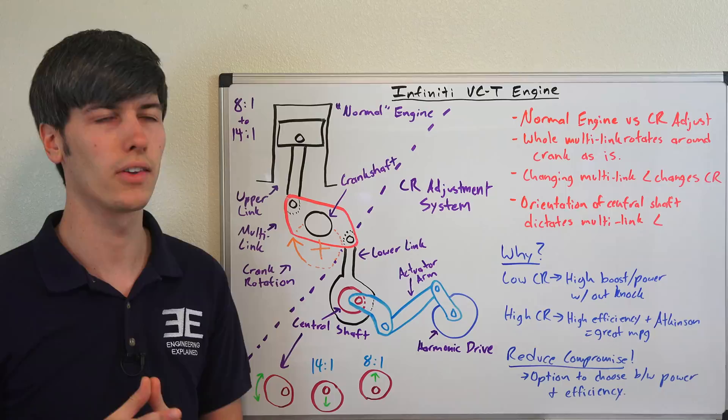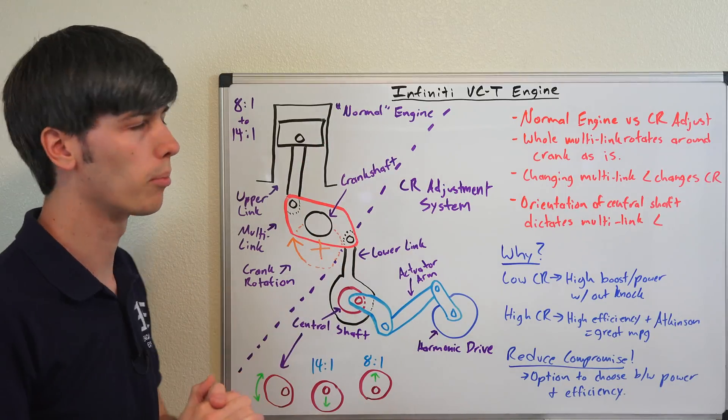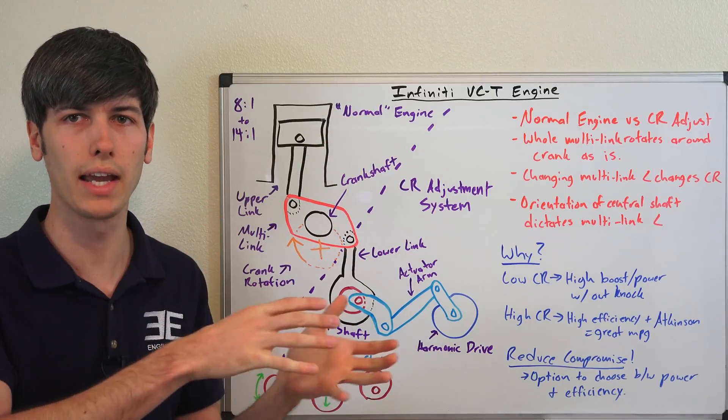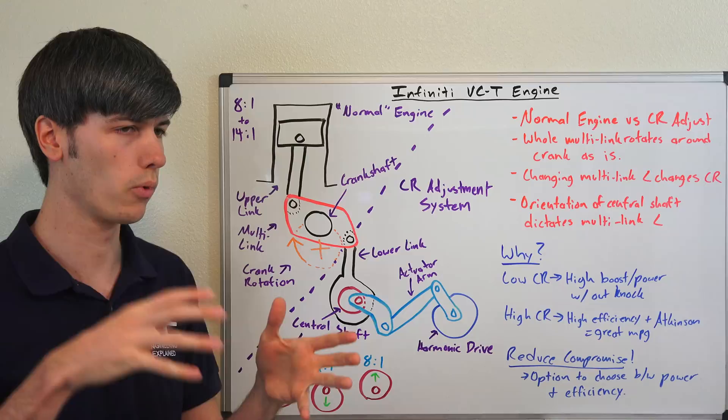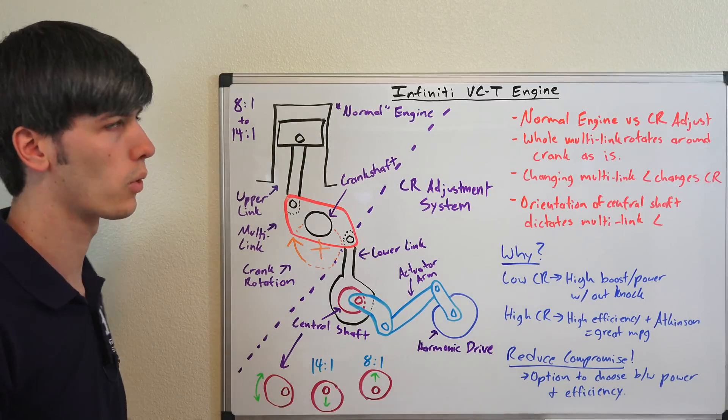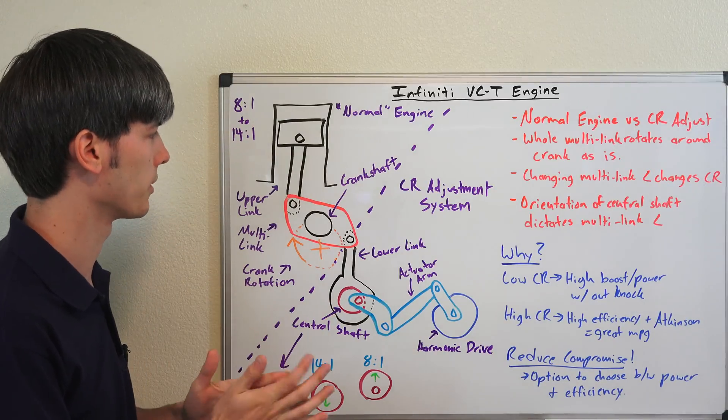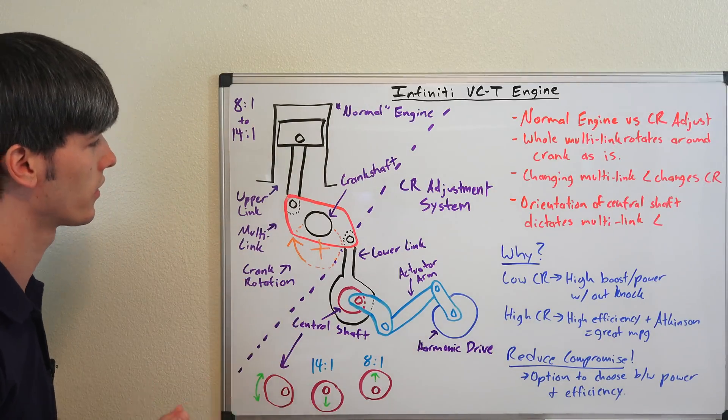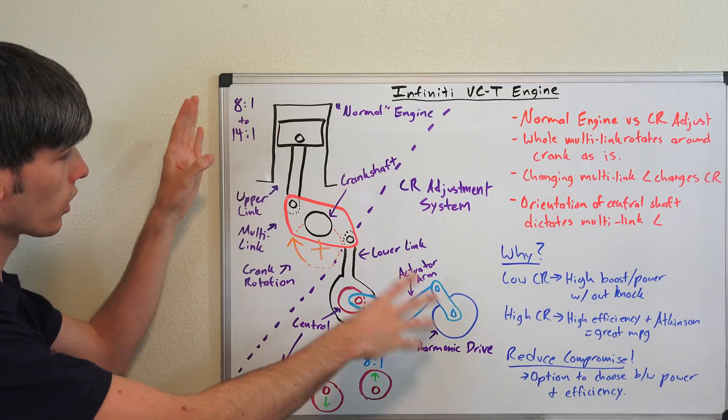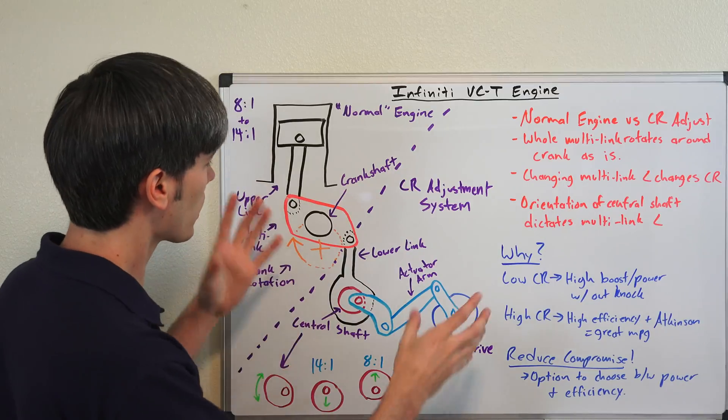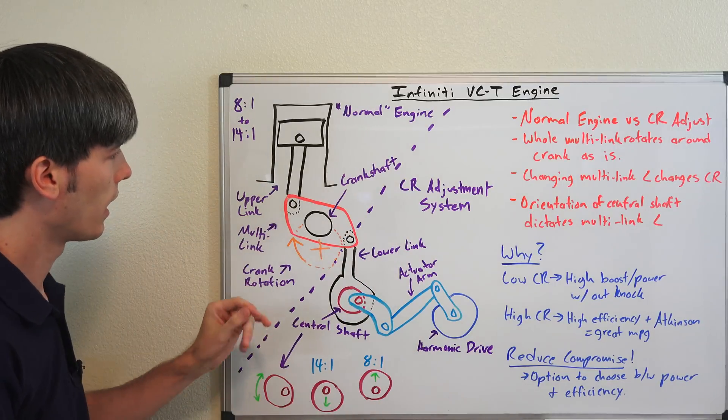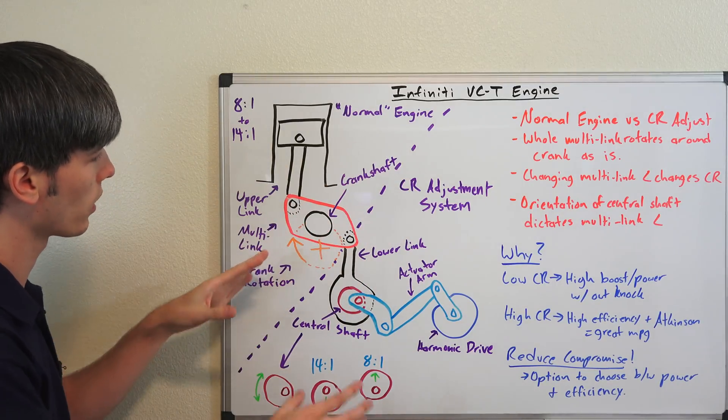The way they do this is by incorporating this variable compression ratio. It can be as low as 8 to 1 with lots of boost for high power, or it can be as high as 14 to 1 for a very efficient operating condition. So how does this system work? How does it do this? Well, it looks like this complex mess, which it kind of is, but we're going to break this down simply so that we can understand what's going on.